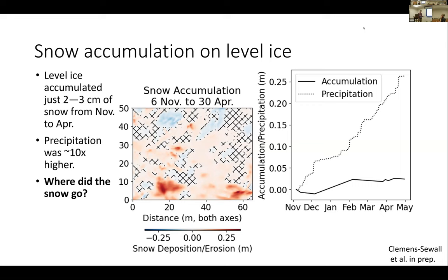What we see is that the precipitation — if we assume a snow density of 330 kilograms per meter cubed — exceeds the observed accumulation on the level ice by about a factor of 10. There's about a 20 to 23 centimeter difference between how much snow we actually observed accumulating and how much we think should have accumulated based on the precipitation measurement. So the question I'm going to pose theories for throughout this talk is: where did this snow go?